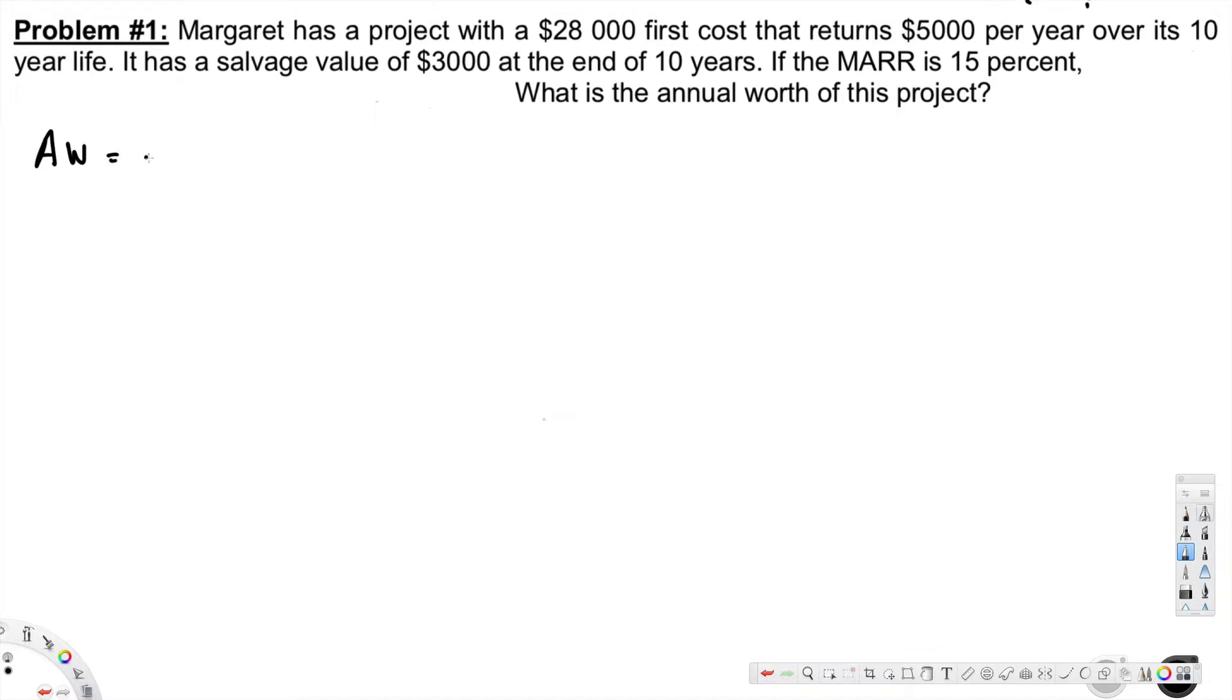First cost is $28,000, so negative $28,000, and A/P, 15 percent is the MARR. 15 percent MARR is right here and for 10 years.